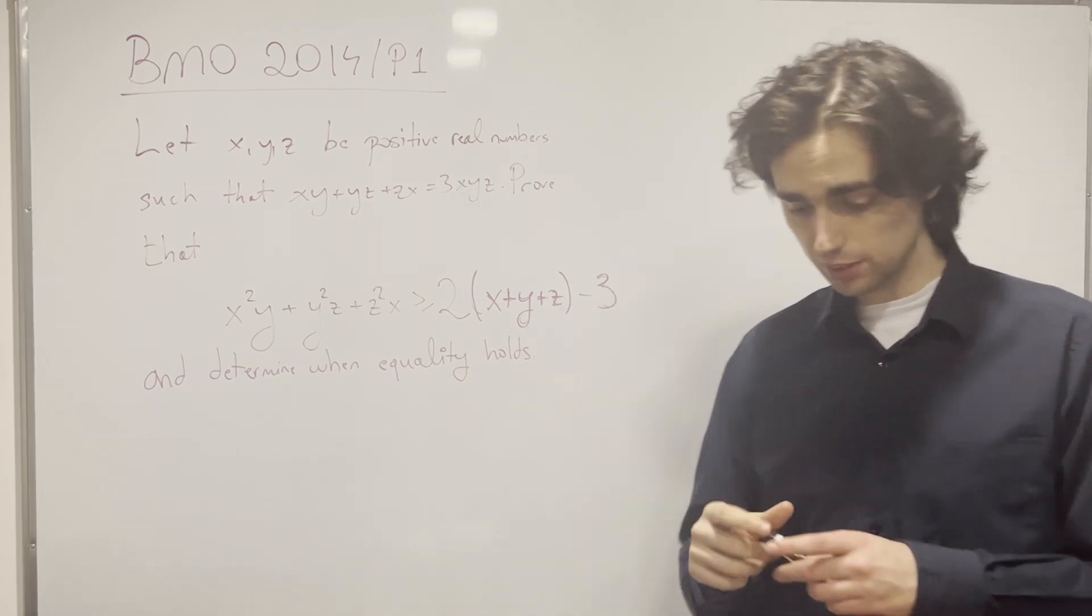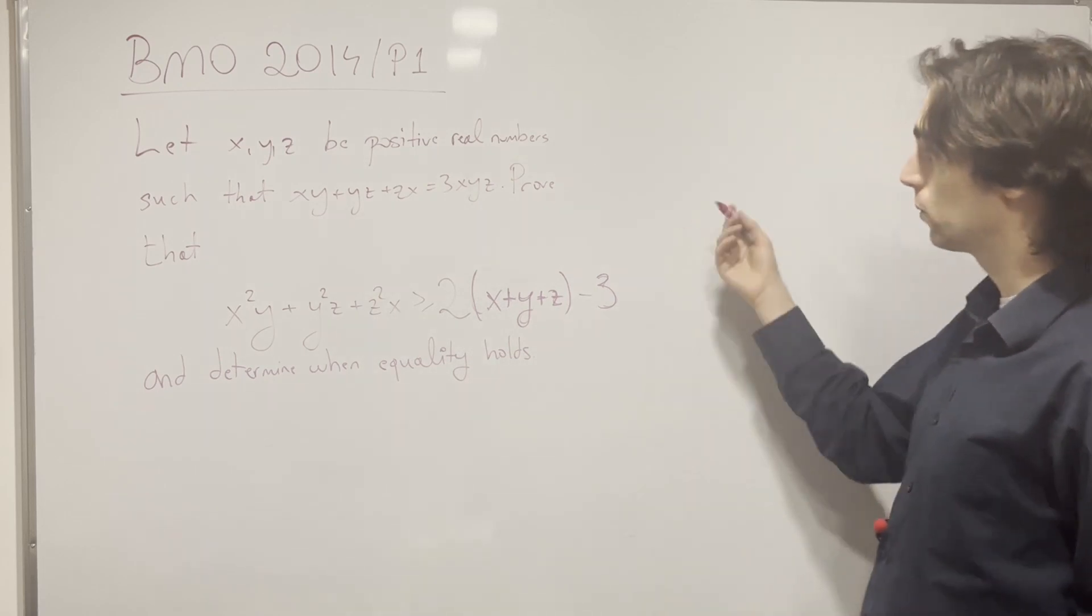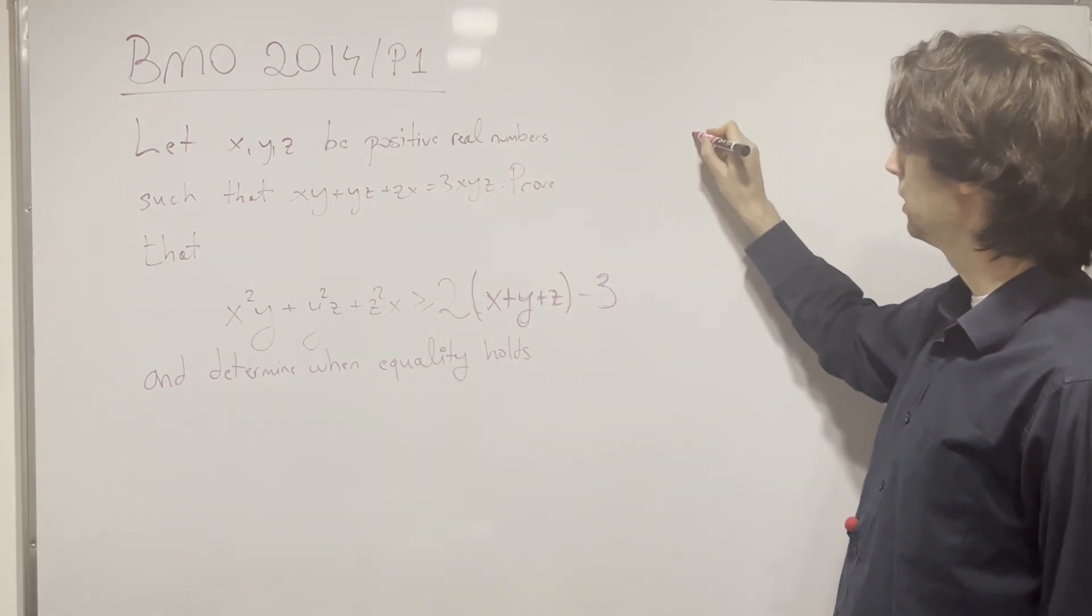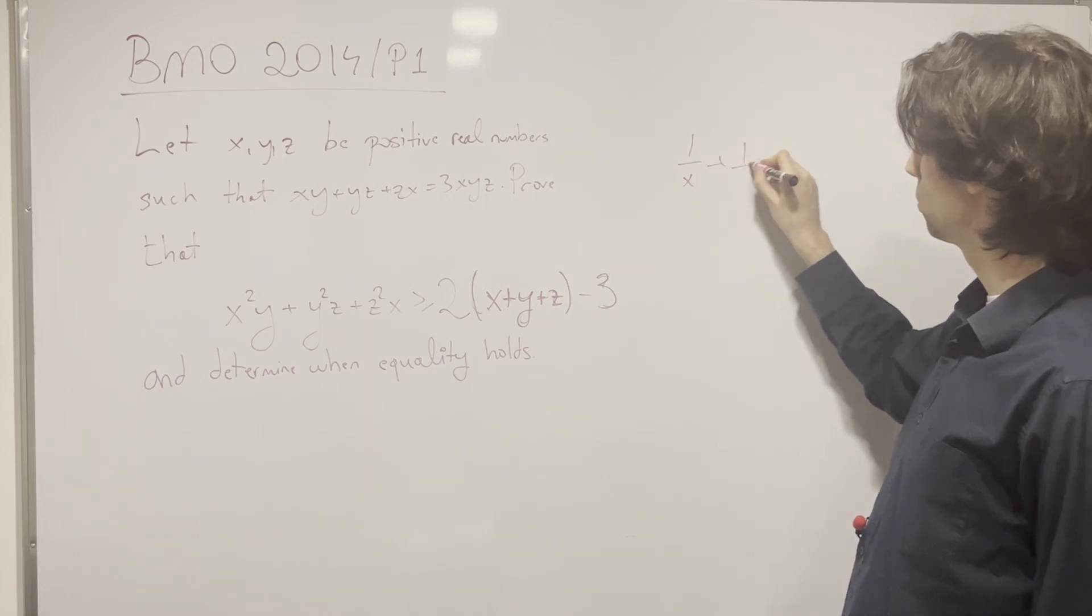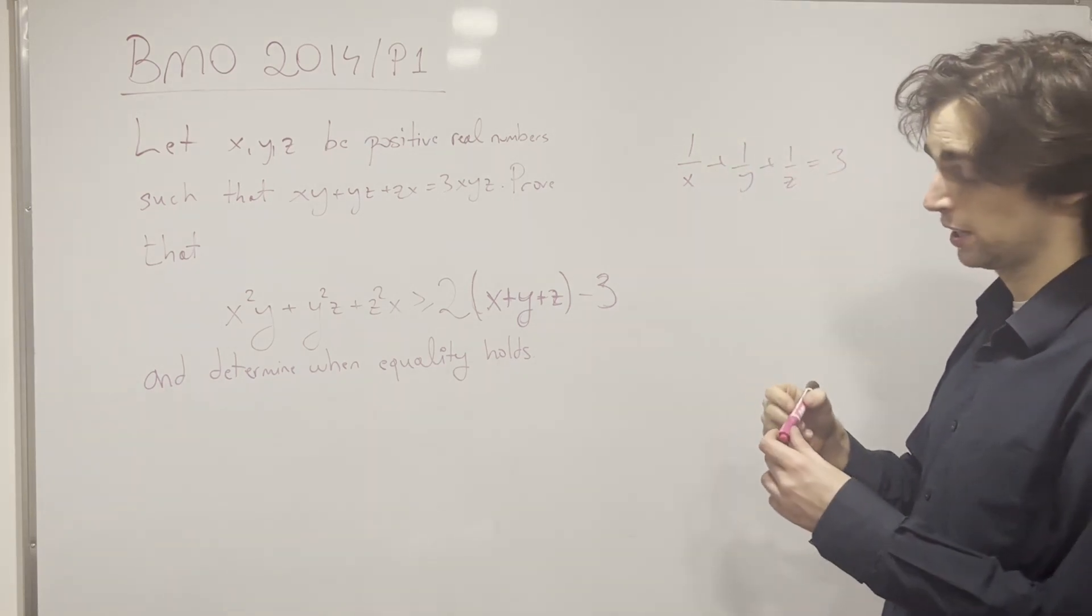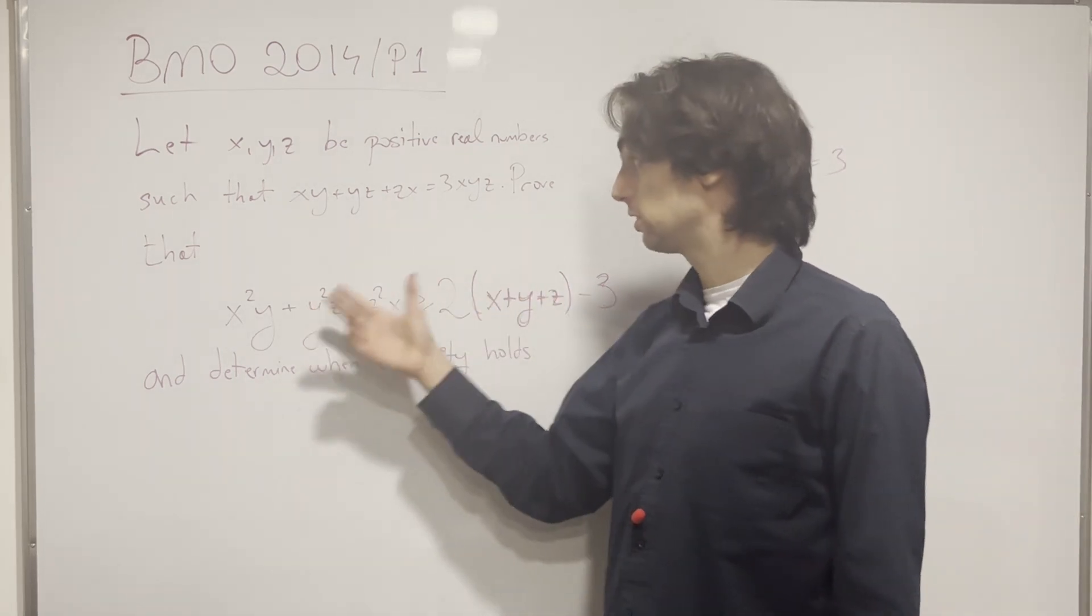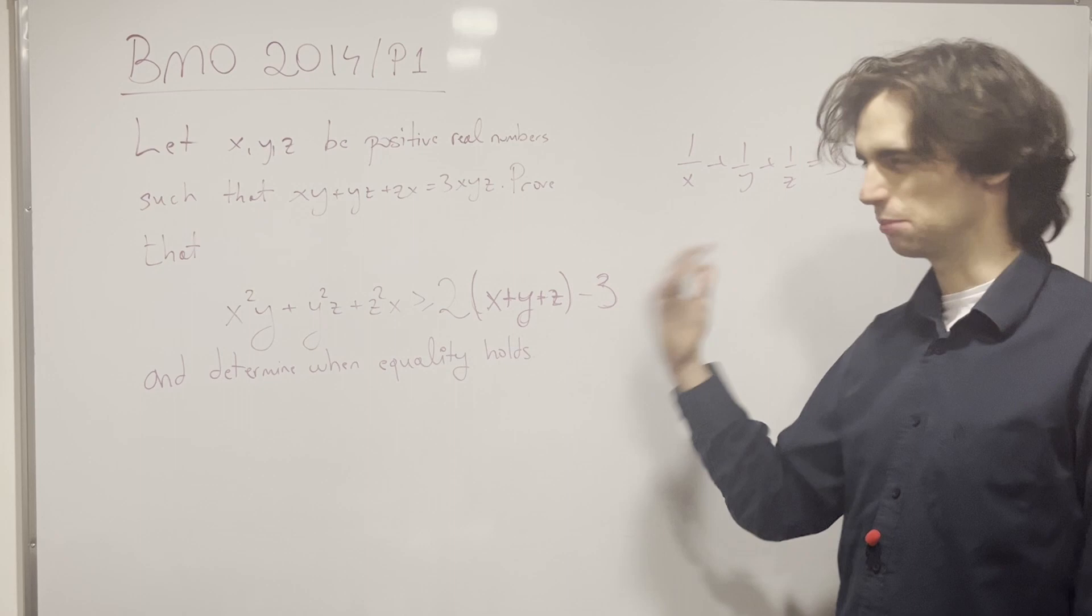Now, another thing we could do is we could rewrite this condition here. We could rewrite this as when dividing by xyz. This is 1/x plus 1/y plus 1/z is equal to 3. And now,